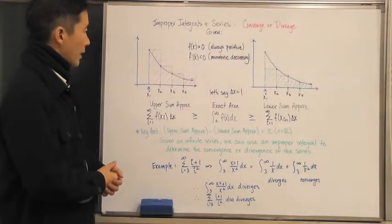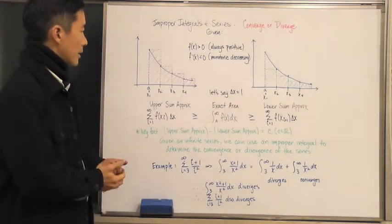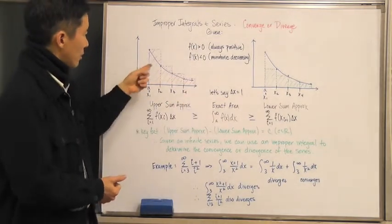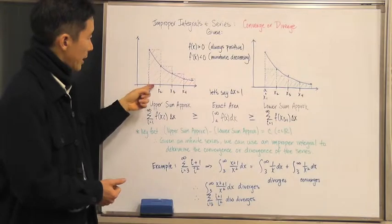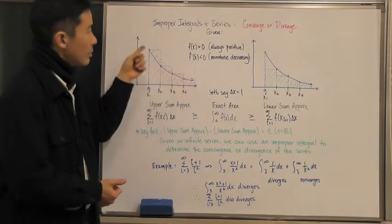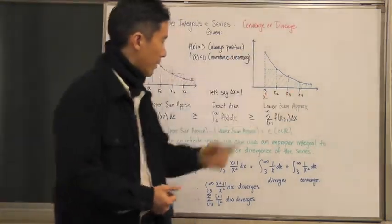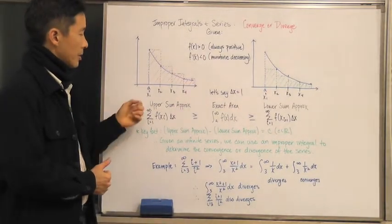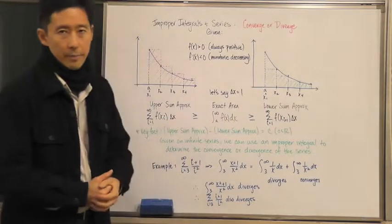So what we have here is three different things. We have the exact area, which is described by the area contained by the x-axis and below the blue curve there. And then we're going to call this the upper sum approximation and the lower sum approximation.